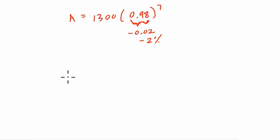Let's say we go back to the beginning, and we have A equals 1,300 times 1. And you want to add 2%. Well, when you add 2% to something, you first have to find what 2% is.